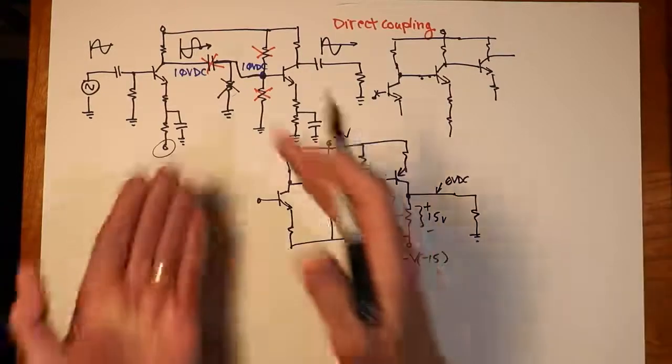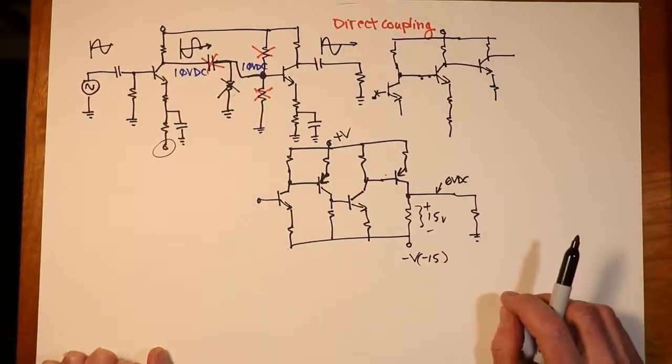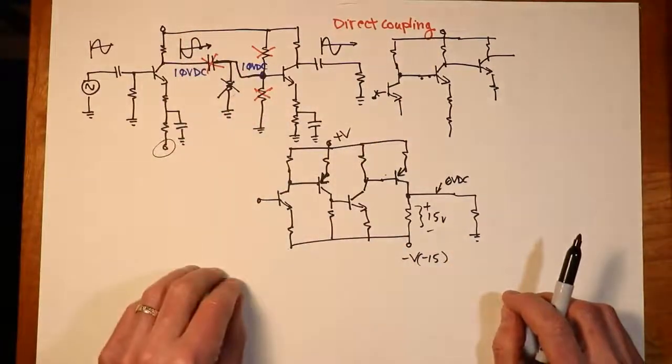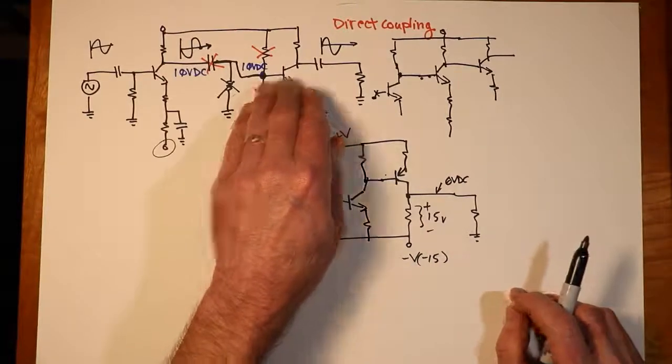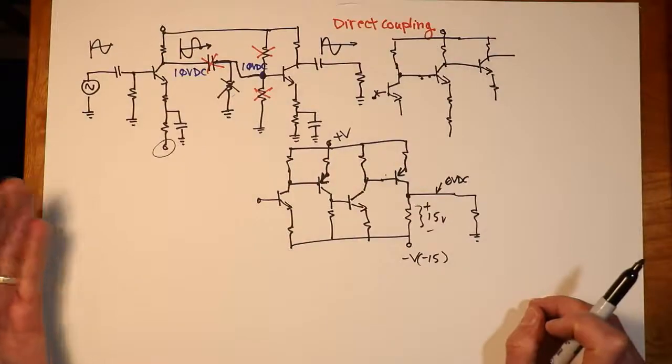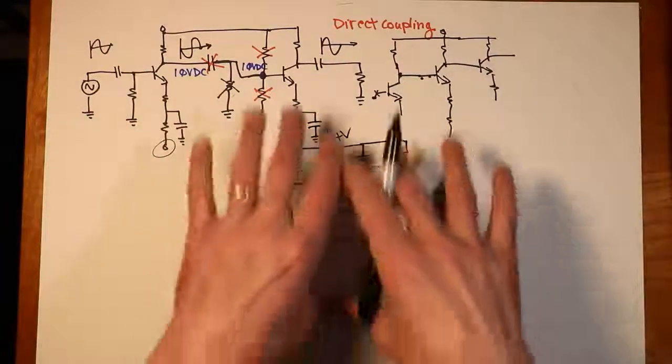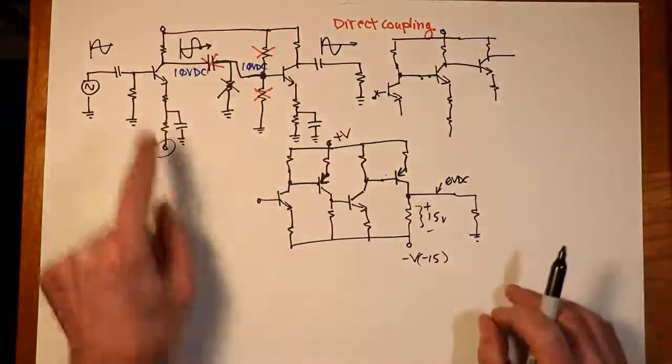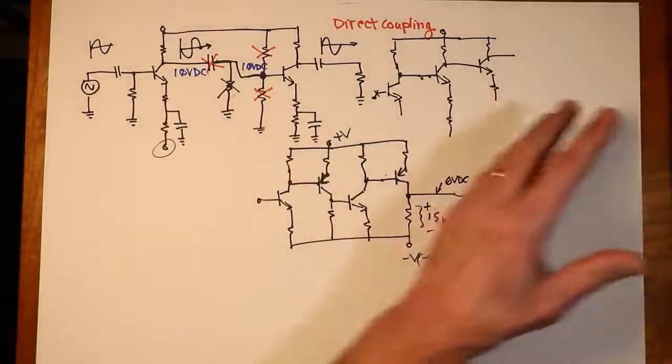So you can see there's multiple ways of doing this, but the basic idea is the second stage becomes the load for the first stage, a third stage becomes the load for a second stage, a fourth stage becomes a load for a third stage, and so on and so on. So when we talk about what is the gain of the entire system, well, it's the gain of stage one times the gain of stage two times the gain of stage three and so on and so forth.